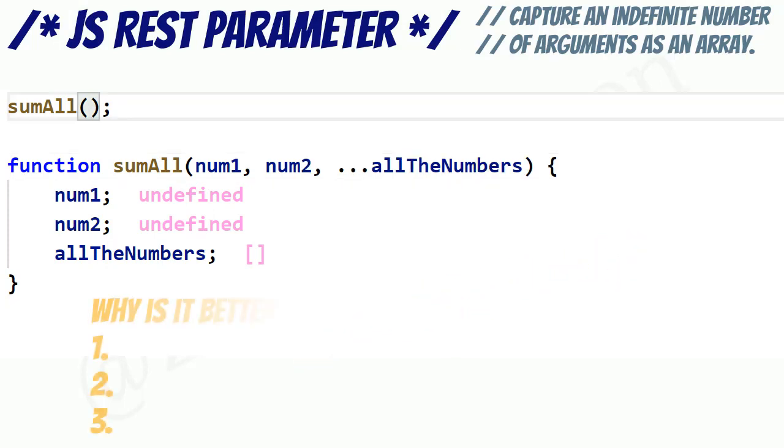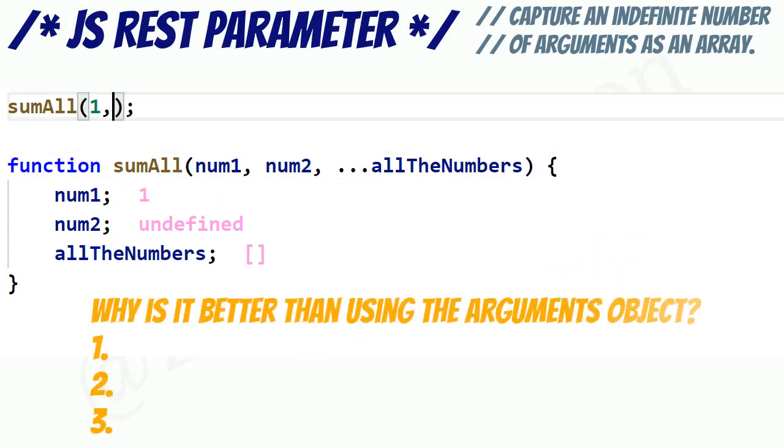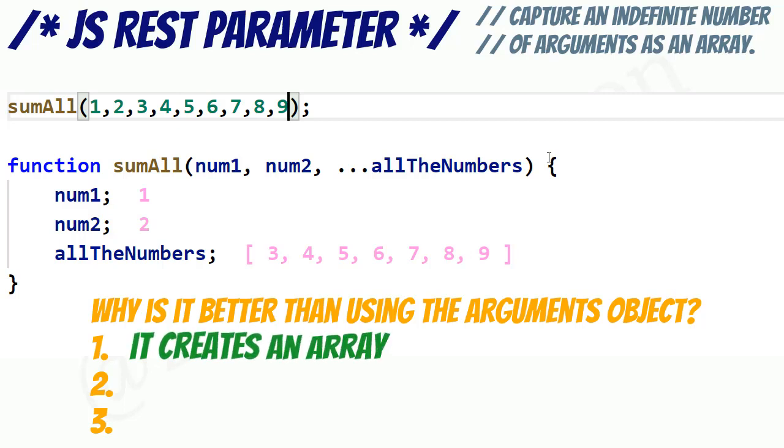Next, let's list a few reasons why using the ES6 rest parameter is generally more convenient than dealing with the legacy arguments object. One, it produces an actual array, which allows us to use array methods immediately.